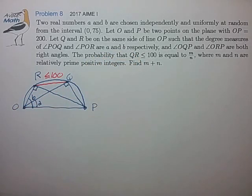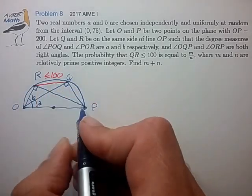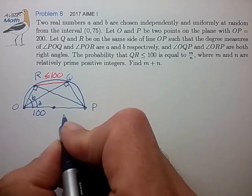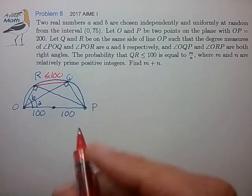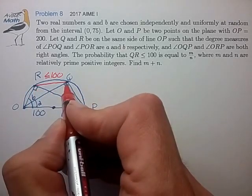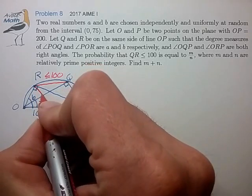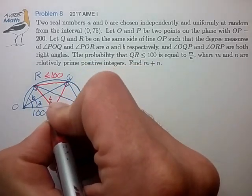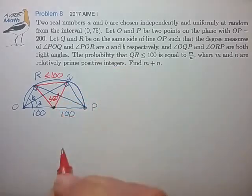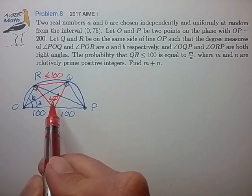Looking at that, this semicircle comes in really handy because this semicircle has radius 100. So the condition that chord RQ is less than 100 is the same condition that this angle is less than 60 degrees. So now we've related this length to this angle, we've made some progress here.